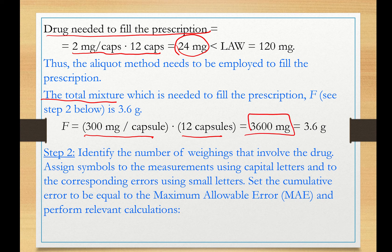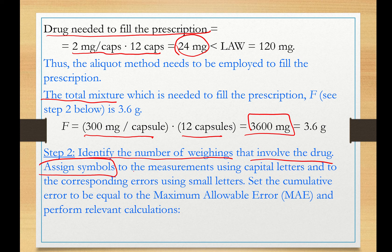Now the second step is to identify the number of weighings that involve the drug, the number of independent weighings, because each measurement that involves the drug will be accompanied by a certain error. And we're going to assign symbols to these measurements, capital letters, and the corresponding errors with small letters.